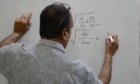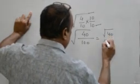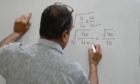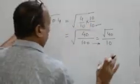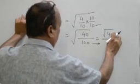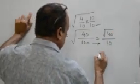This will be equal to under root of 40 divided by 10. Here, we have taken the square root of 100. Now what we have to do? We have to take the square root of 40. It will be around 6.32.